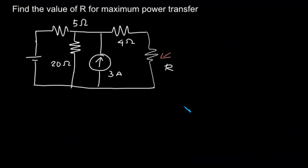We have to find out the value of this resistance R for maximum power transfer. We may see that this voltage source is not given.